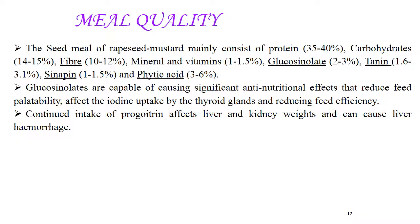Coming to meal quality: seed meal of rapeseed and mustard should be rich in proteins. It mainly consists of protein 35 to 40%, carbohydrate 14 to 15%, fiber 10 to 12%, minerals and vitamins 1 to 1.5%, glucosinolates 2 to 3%, and tannin 1.6 to 3.1%. Glucosinolates are capable of causing significant anti-nutritional effects that reduce feed palatability, affect iodine uptake by the thyroid gland, and reduce feeding efficiency. That's why low glucosinolates are desirable. Continued intake of progoitrin affects liver and kidney weights and can cause liver hemorrhage.